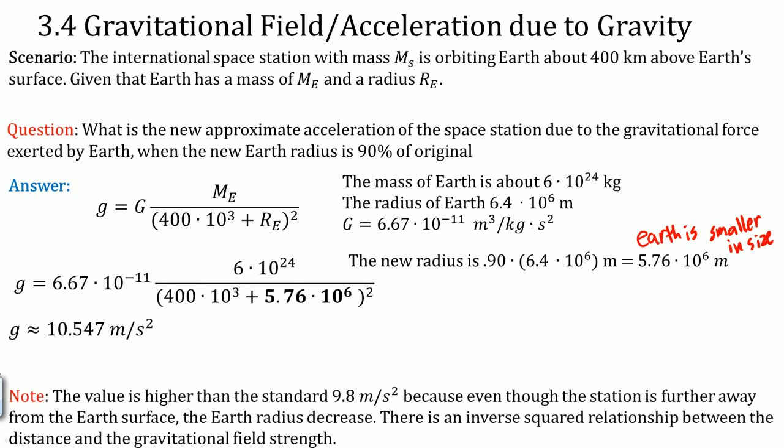You should note, this value is higher than the standard 9.8 meters per second squared that is experienced on the surface of Earth, because even though the space station is further away from the Earth's surface, the Earth's radius will decrease.